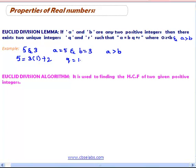where q is equal to 1 and r is equal to 2. We have clearly 0 less than r less than b. This is Euclid division lemma.